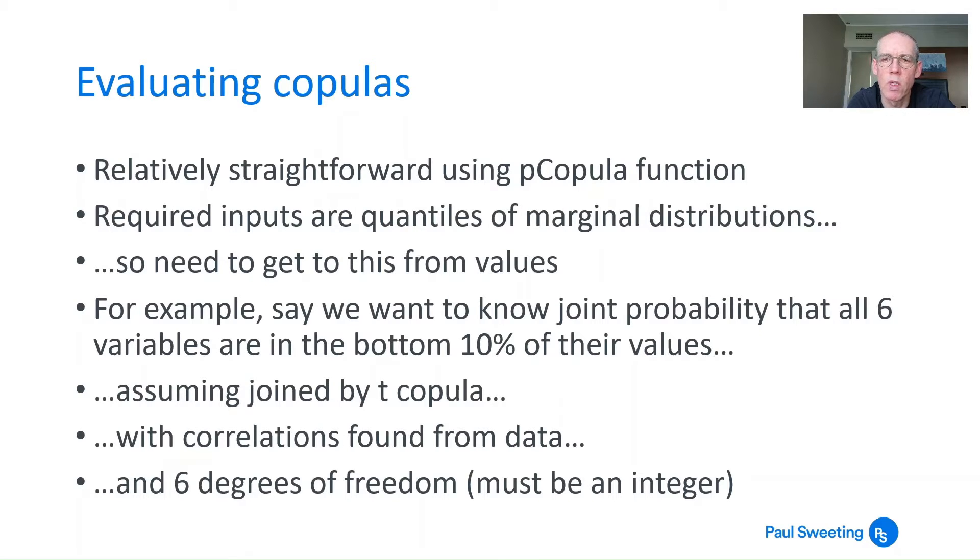For example, say you wanted to know the joint probability that all six of your variables are in the bottom 10% of their values, assuming they're joined by a t copula. We'll assume the correlations are found from the data, and it's six degrees of freedom, because you need an integer value. What we found from the data was about 6.2, so let's use six.